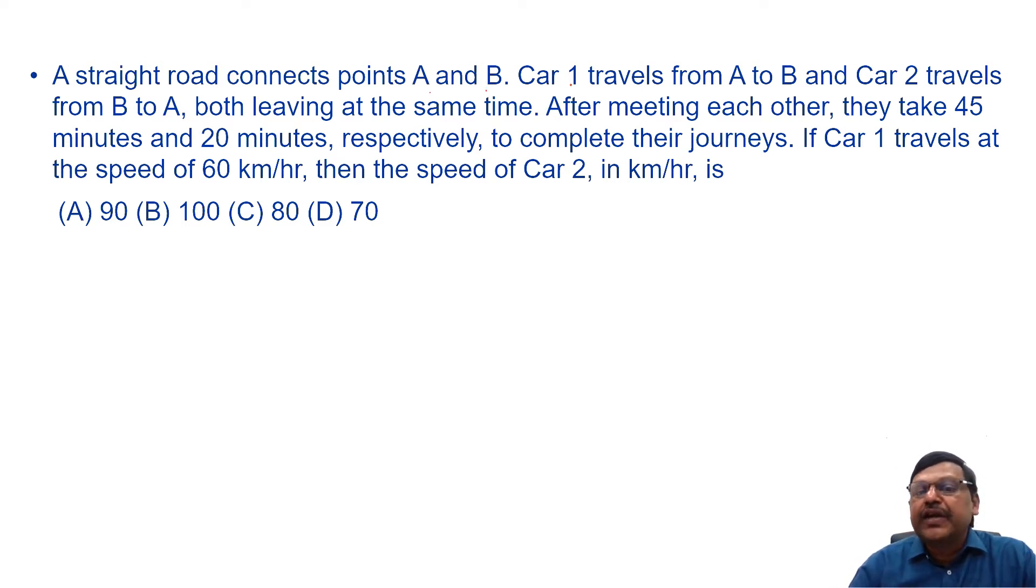A straight road connects points A and B. Car 1 travels from A to B and car 2 travels from B to A, both leaving at the same time. After meeting each other, they take 45 minutes and 20 minutes respectively to complete their journeys. If car 1 travels at the speed of 60 km per hour, then the speed of car 2 in kilometers per hour is.